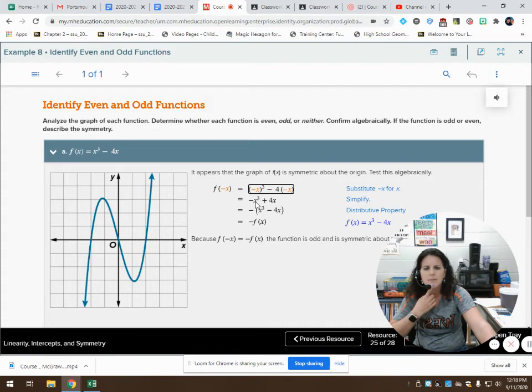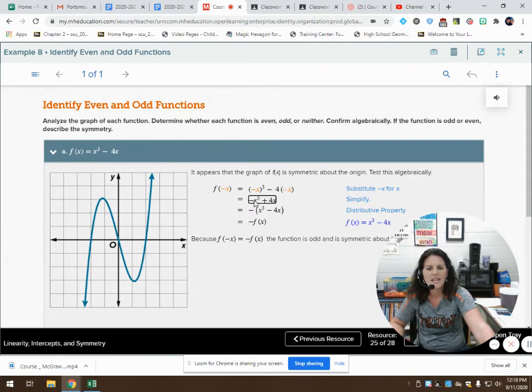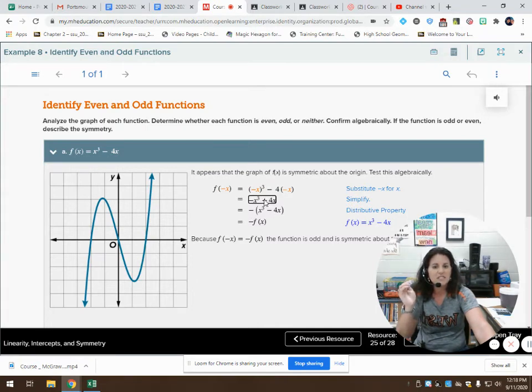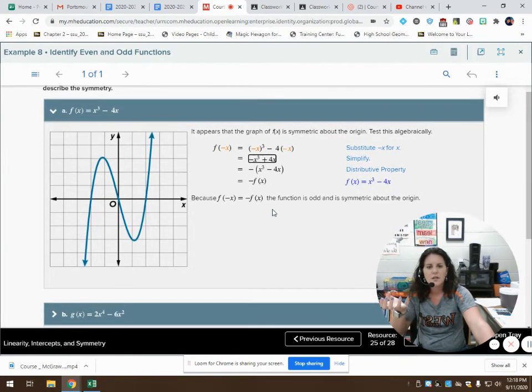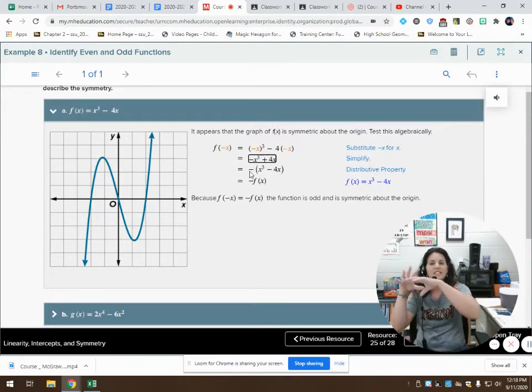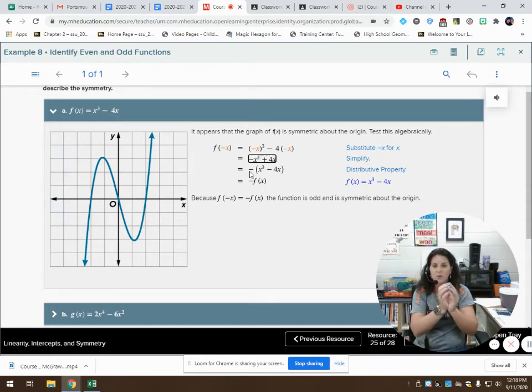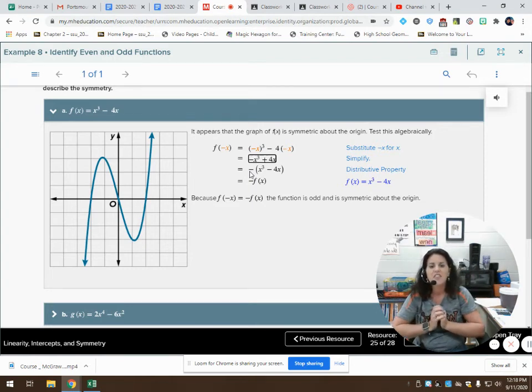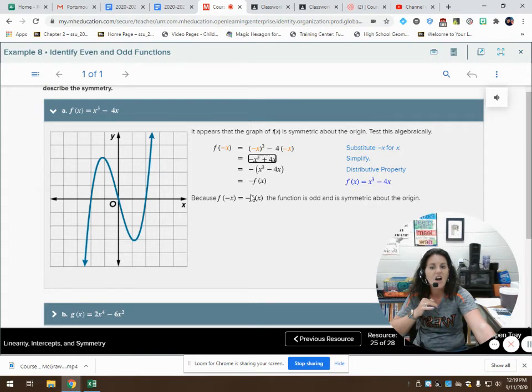Let's think about this. If I was to factor out a negative from both of these terms, then I'm left with negative x cubed minus 4x. This is my original function, right? x cubed minus 4x, but it has a negative outside of it, so it's the opposite, it's negative of my original function. Because f of negative x is equal to negative f of x, the function is odd and is symmetric about the origin. This negative out here makes it an odd function.